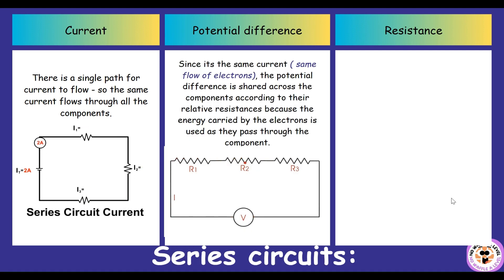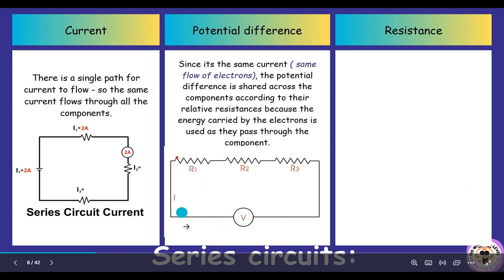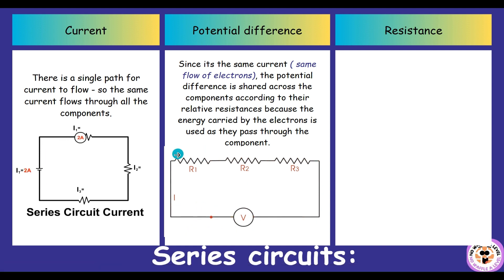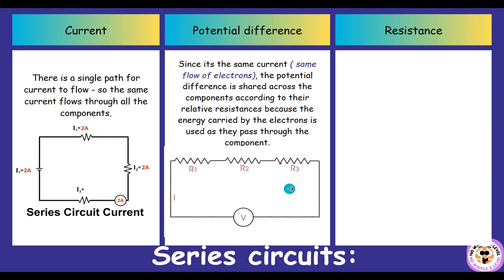Looking at potential difference: since the current is the same throughout, the potential difference is shared across the components according to their relative resistances — as a ratio of each component's resistance. This is because the energy carried by the electrons gets used up as they pass through each component. For example, if the power supply is 6 volts, resistor one could use up 2 volts, resistor two 3 volts, and the third 1 volt, totalling 6 volts.